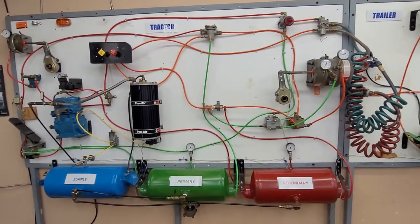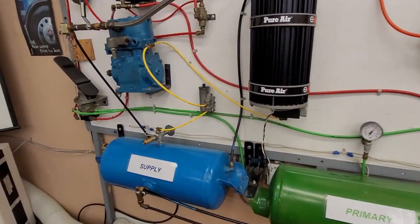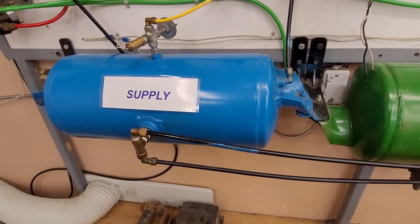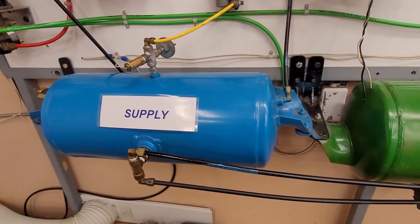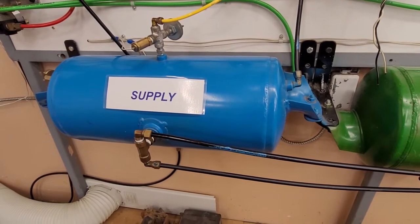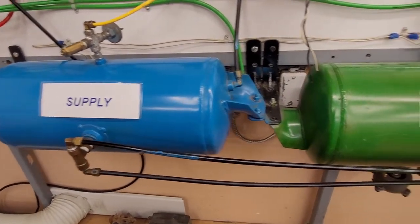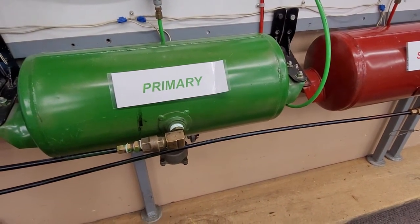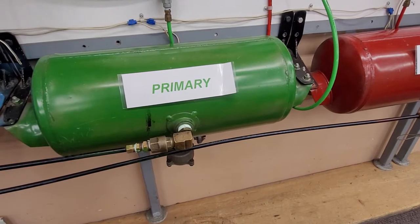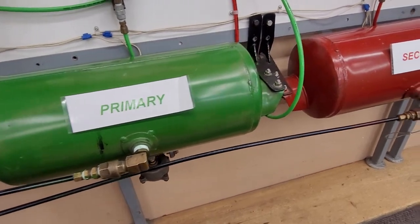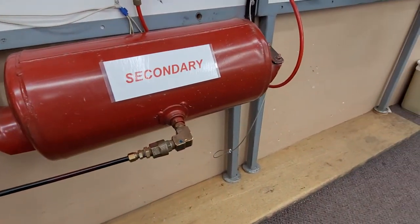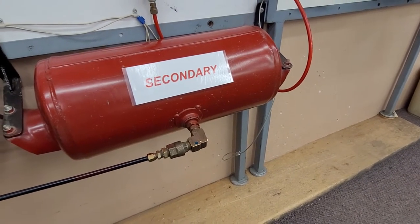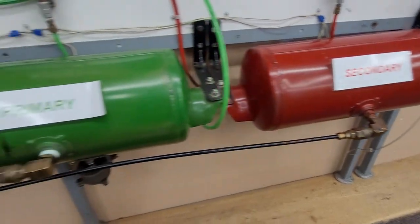We're going to start with the components on the tractor. Every truck will have a supply tank which has a double check valve. The supply tank provides air to the primary tank reservoir which has a one-way check valve, and to the secondary reservoir which also has a one-way check valve. Those are our service tanks on the truck.